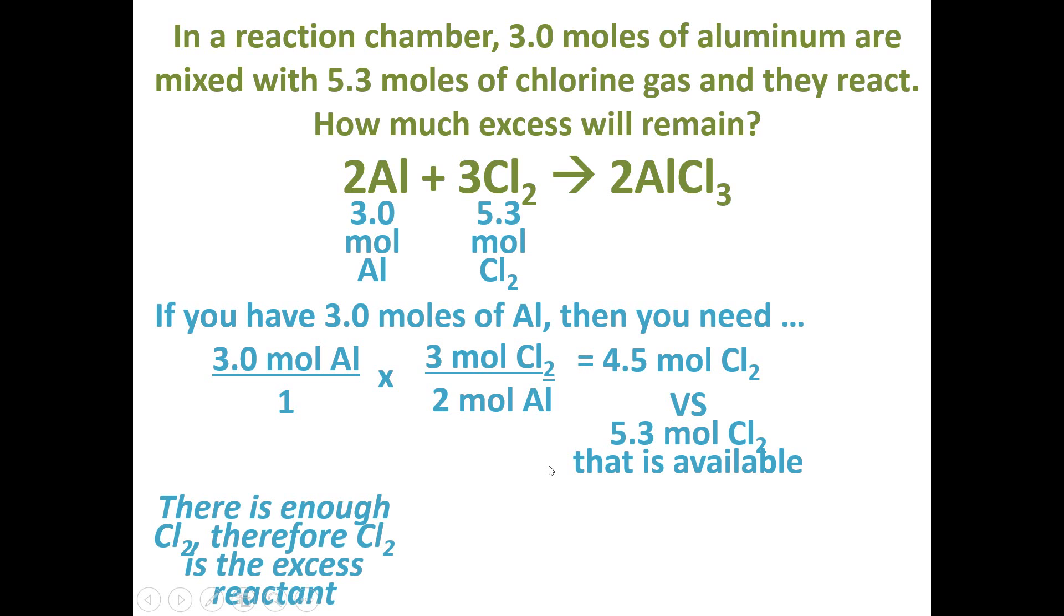Let's use that money analogy again. If we had $5.30 and we only needed $4.50, how much is left over? It's a simple subtraction problem after that. As long as you do the calculation for the excess reactant, you can easily subtract the two numbers and calculate how much is left over or in excess. This is how much chlorine will be left over after the reaction is over and after you've made the maximum amount of aluminum chloride.